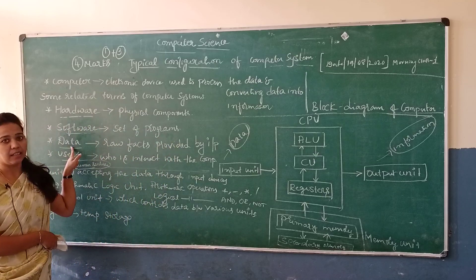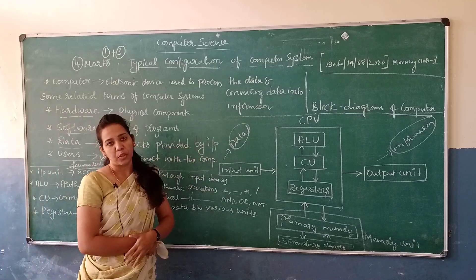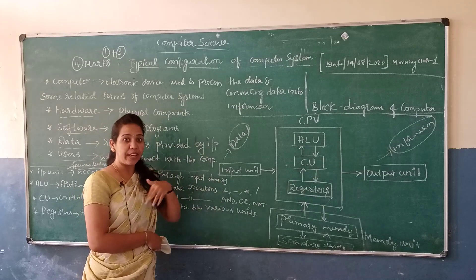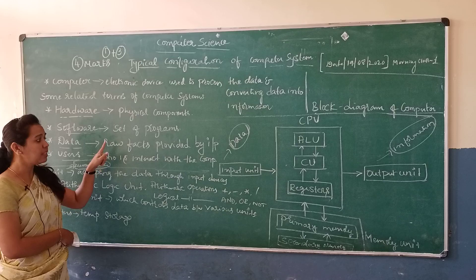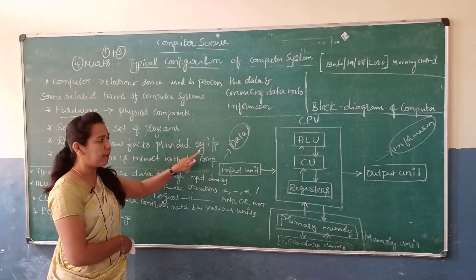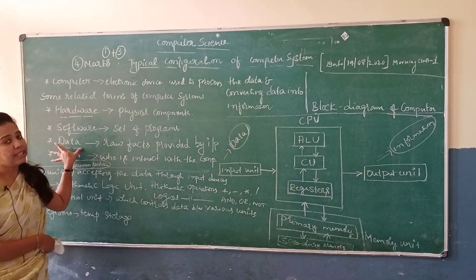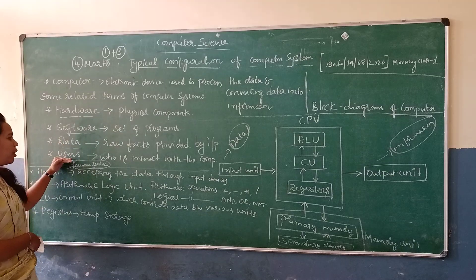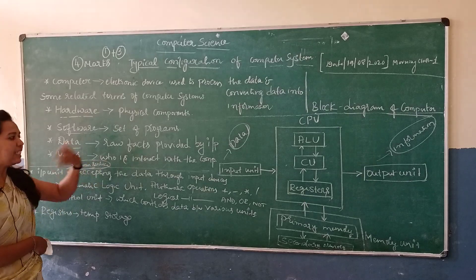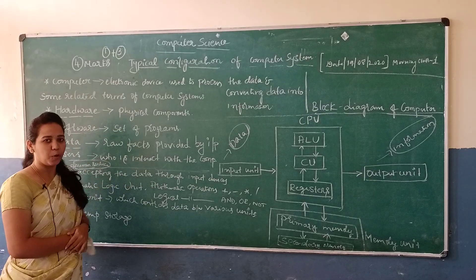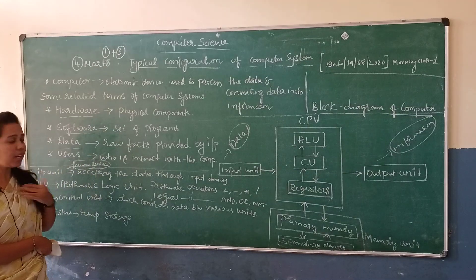Next is data. Data means it is a collection of raw facts provided by the input. Next is users. Users means who are going to use the computer — who interacts with the computer. We are the users.